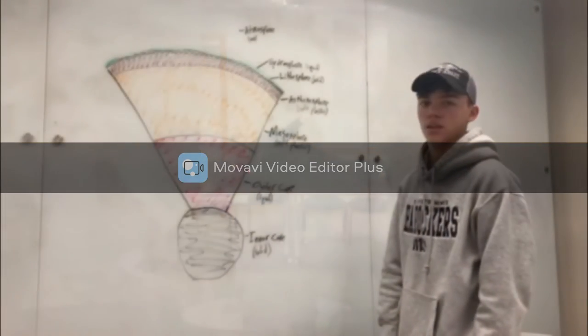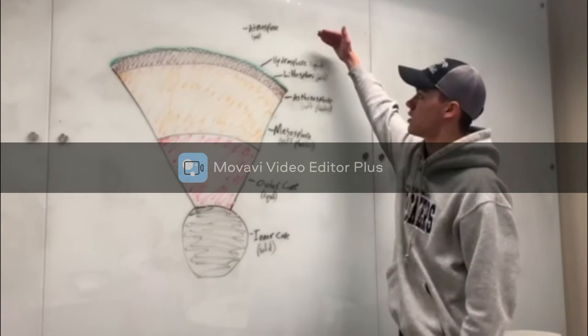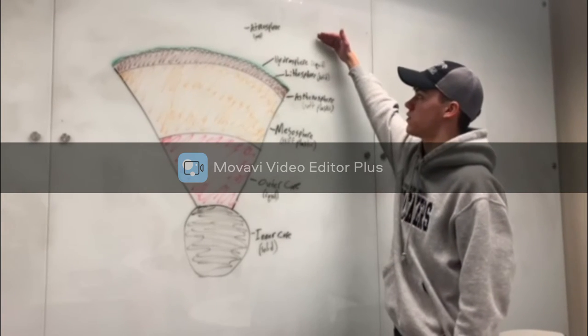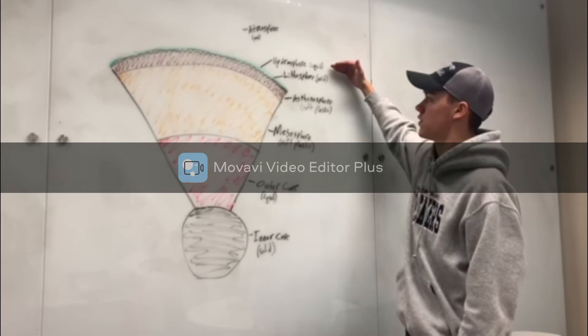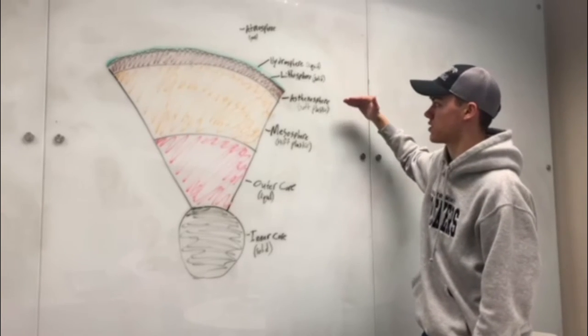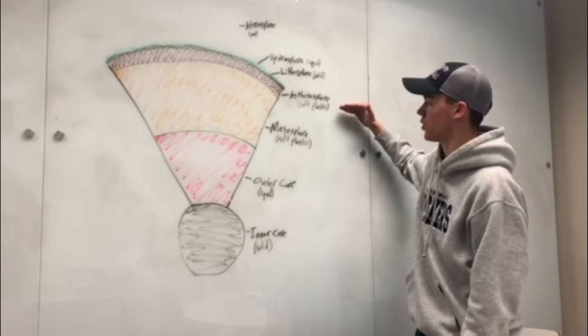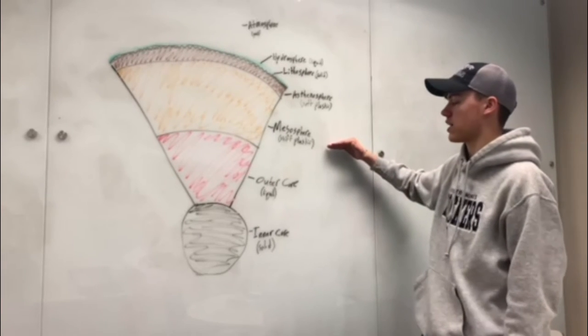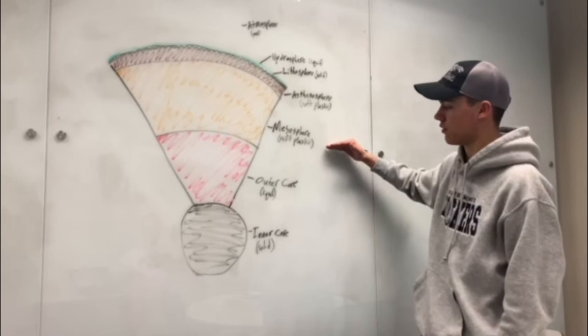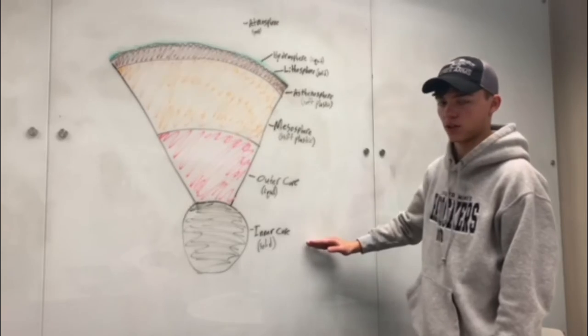On to the structure of the Earth. Layering the Earth by strength, we get more layers. At the top is the atmosphere, which is gaseous; the hydrosphere, which is liquid; the lithosphere, which is solid; the asthenosphere, which is soft and plastic; the mesosphere, which is plastic but also stiffer; the liquid outer core; and the solid inner core.